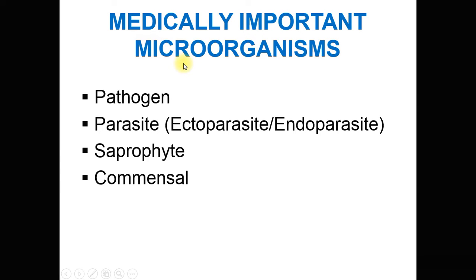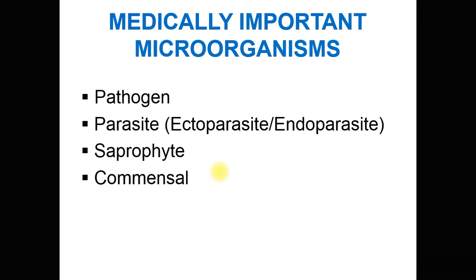The medically important microorganisms can be classified as pathogen, parasite, saprophyte, and commensal. A pathogen is an agent capable of causing infection. Parasites are microorganisms dependent on the host for shelter and nourishment — if present outside the host body they are called ectoparasites; if inside, endoparasites. Saprophytes thrive on dead and decaying matter; they are not pathogenic but sometimes can result in infection. Commensals live in mutualistic association with the host body and may or may not benefit the host.